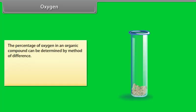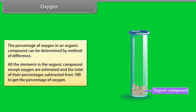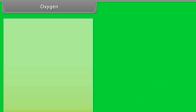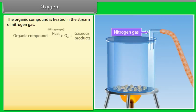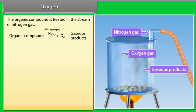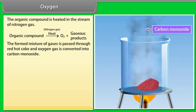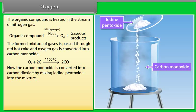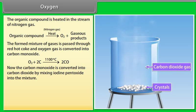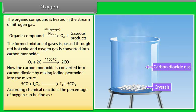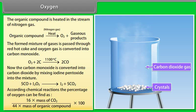Oxygen: the percentage of oxygen in an organic compound can be determined by the method of difference — all elements except oxygen are estimated and the total of their percentages is subtracted from 100. Alternatively, the organic compound is heated in a stream of nitrogen gas. The formed mixture of gases is passed through red-hot coke and oxygen gas is converted to carbon monoxide. The carbon monoxide is then converted to carbon dioxide by mixing with iodine pentoxide. Percentage of oxygen = (16 × mass of CO₂) ÷ (44 × mass of organic compound) × 100.